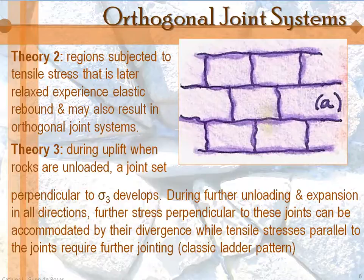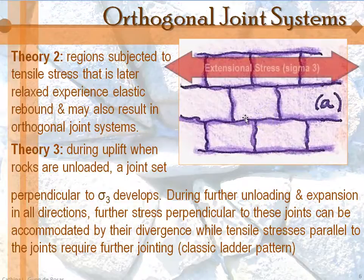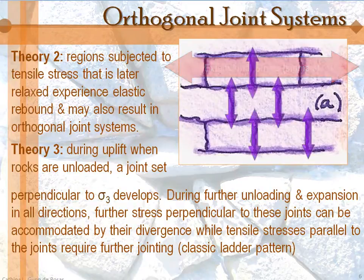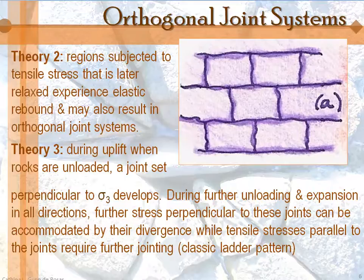The original sigma-3 stress can be accommodated because you've already popped open joints — they just spread open a little more. However, when you've got extensional stresses in the other direction, parallel to the joint faces already formed, you have a new sigma-3 oriented that way, and it wants to form joints in that direction. That's where you get these short joints that break across the original long joints.